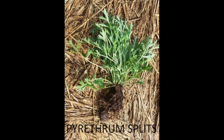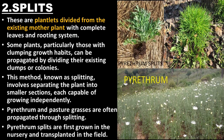Splits are plantlets divided from the existing mother plant with complete leaves and rooting system. Some plants, particularly those with clumping growth habits, can be propagated by dividing their existing clumps or colonies. This method, known as splitting, involves separating the plant into smaller sections, each capable of growing independently.